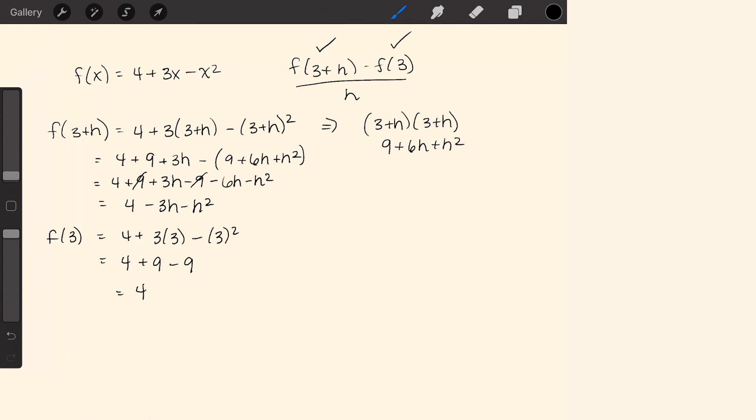Now we evaluated that. Now we plug those in. 4 minus 3h minus h squared minus what we got for f of 3, which is 4, all over h.